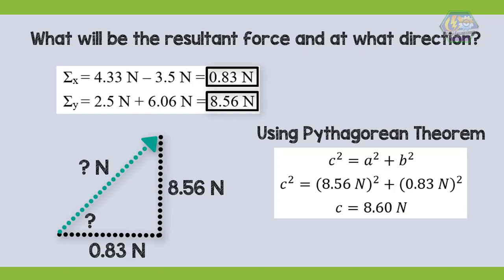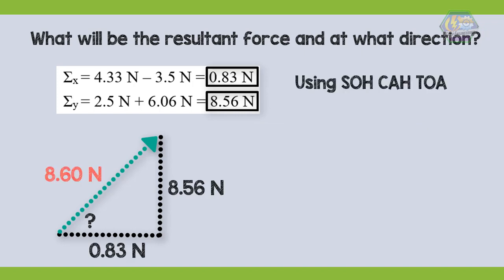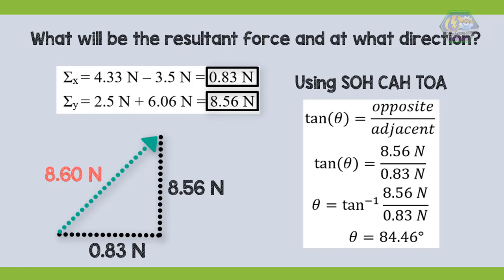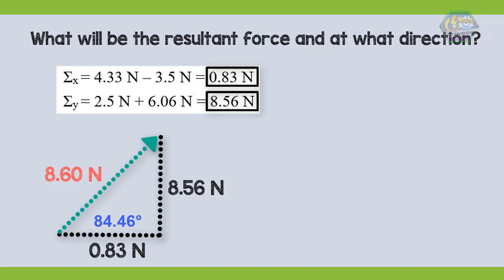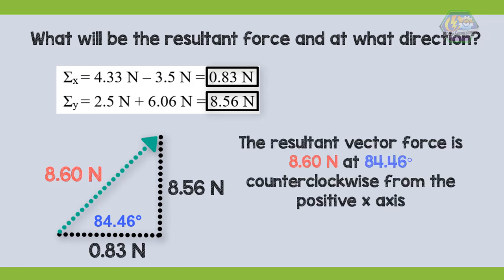Using C squared equals A squared plus B squared, the magnitude of the resultant vector force is 8.60 Newton. To find the angle, we view it again as a triangle and use SOH-CAH-TOA — specifically the tangent function. The direction is 84.46 degrees counterclockwise from the positive X axis. So the resultant vector force is 8.60 Newton at 84.46 degrees counterclockwise from the positive X axis.